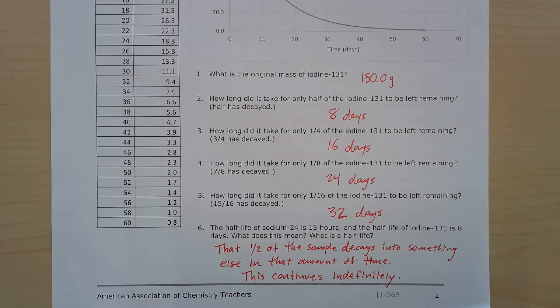Number three, how long did it take for only a quarter of the iodine-131 to be left remaining? That would be 16 days. Four, one-eighth of the iodine to be left remaining took 24 days. And for one-sixteenth, it took 32 days for that much to be remaining.